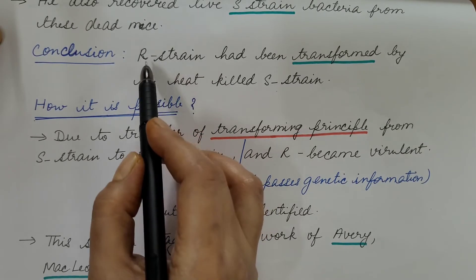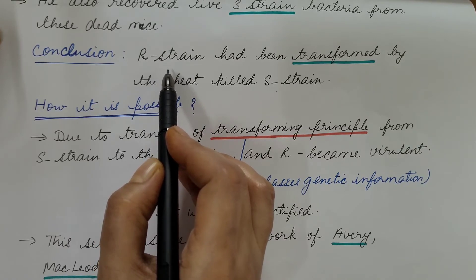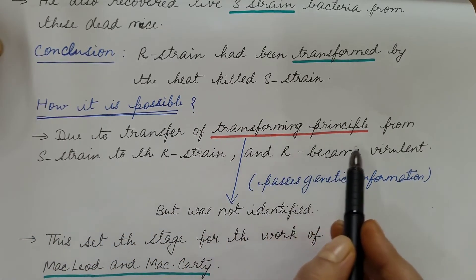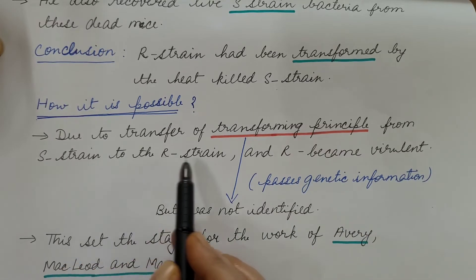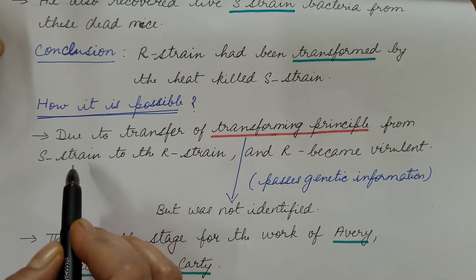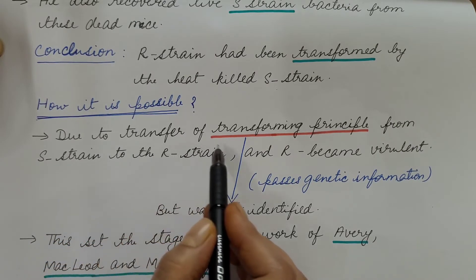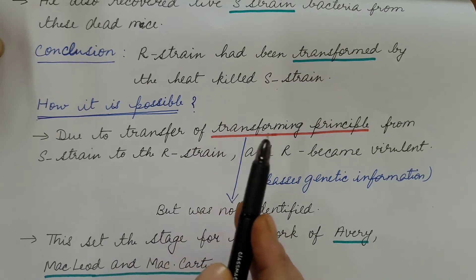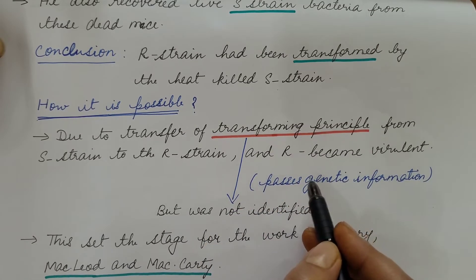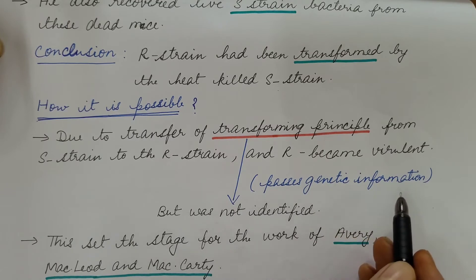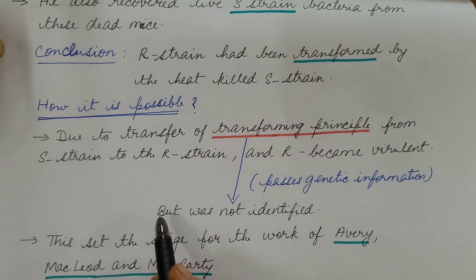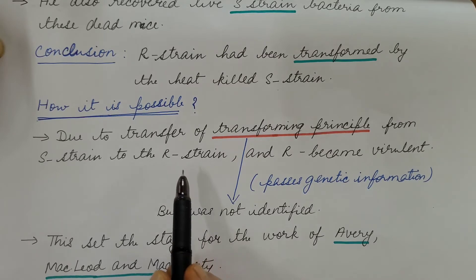The question arises: how is this possible? It is possible due to the transfer of a transforming principle from the S strain to the R strain, as a result of which the R strain is transformed into the S strain that causes disease in mice. So this transforming principle or transforming material passes genetic information. But at that time, Griffith was not able to identify what that transforming material was.